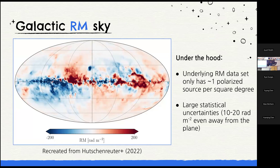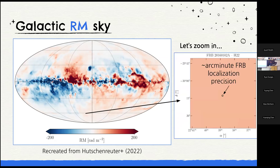The Galactic rotation measure sky map looks beautiful, but the underlying data is problematic — only one polarized source per square degree, so we don't know what the rotation measure looks like on smaller angular scales, and there are large statistical uncertainties away from the Galactic plane. Zooming in, the localization region of an FRB is only an arcminute in radius, but the map has no structure at those scales — we're averaging over much larger regions than the FRB's actual position, adding inherent uncertainty to our measurements.